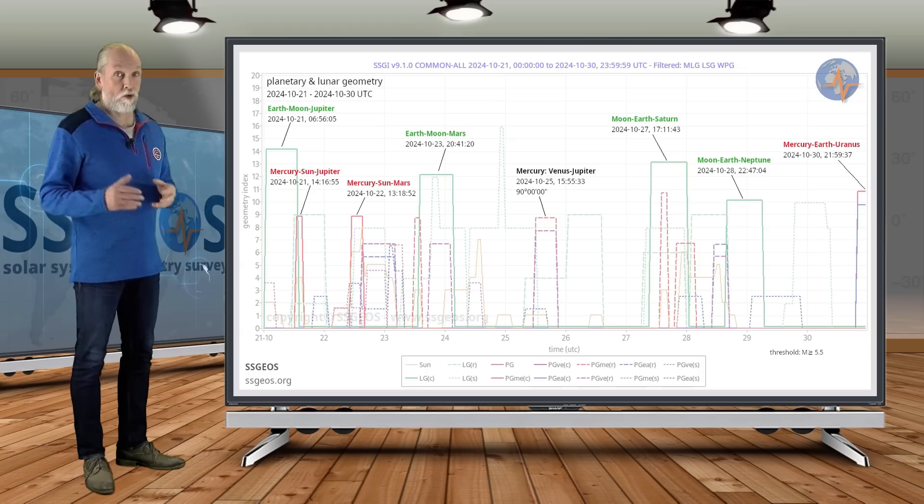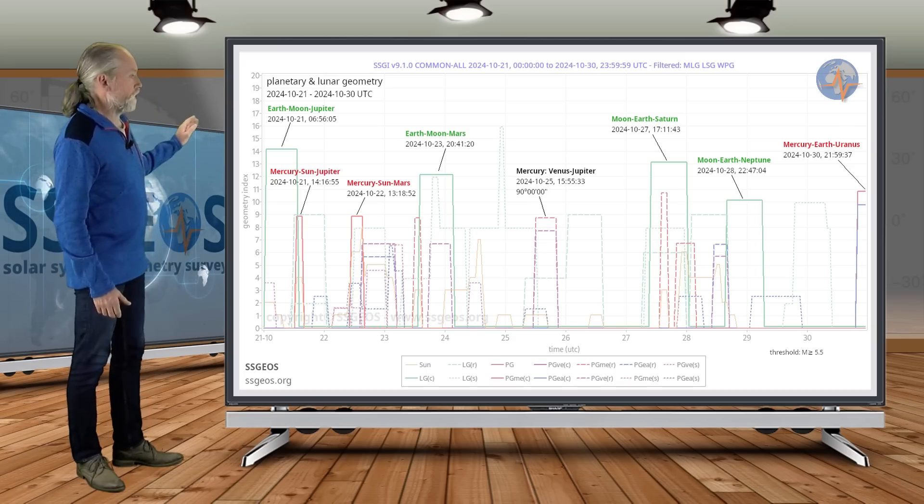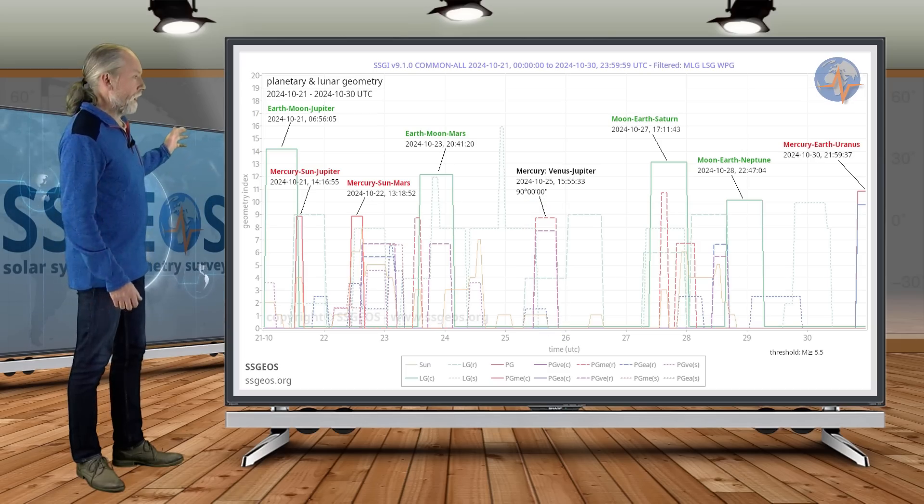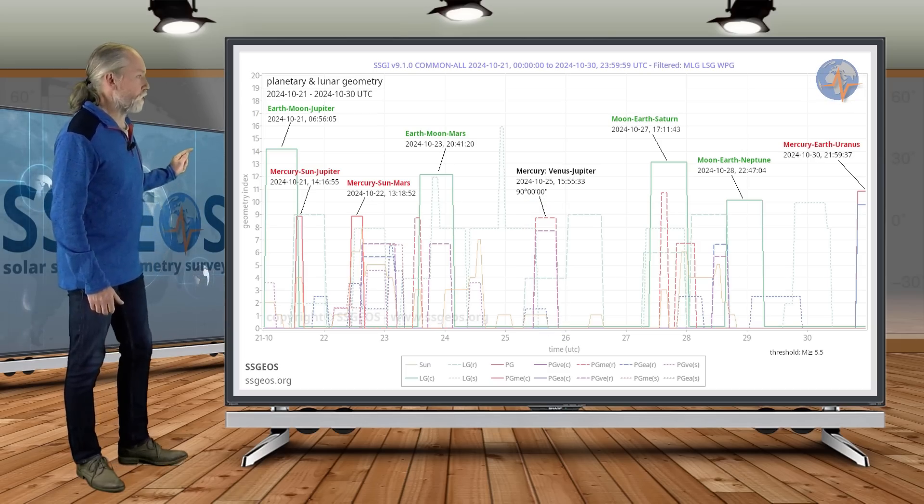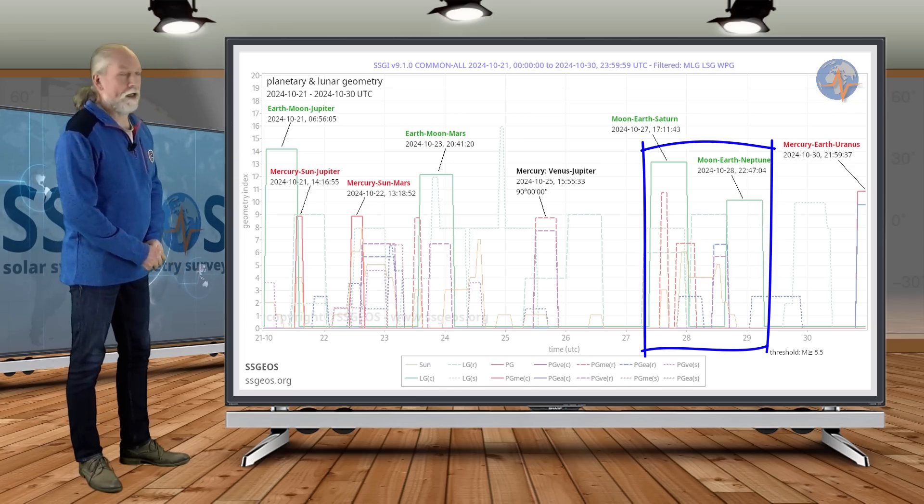So the question is, what's going to happen with the lunar conjunction with Jupiter? Like I said, around the 23rd there is the potential for a stronger seismic event. If you look further on the SSGI graph, we primarily see right-angle geometry—planetary geometry like Mercury-Venus-Jupiter—not too critical. We see the next lunar conjunctions on the 27th and 28th with Saturn and Neptune.